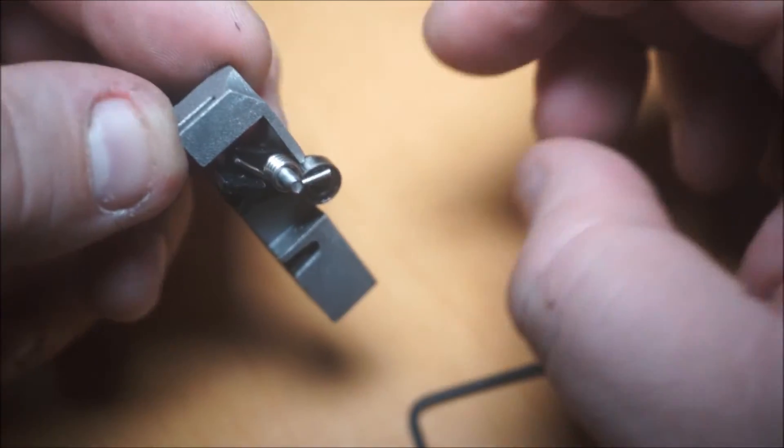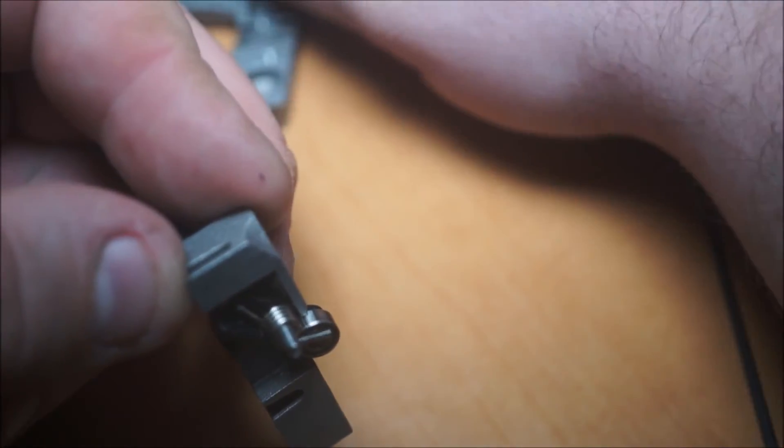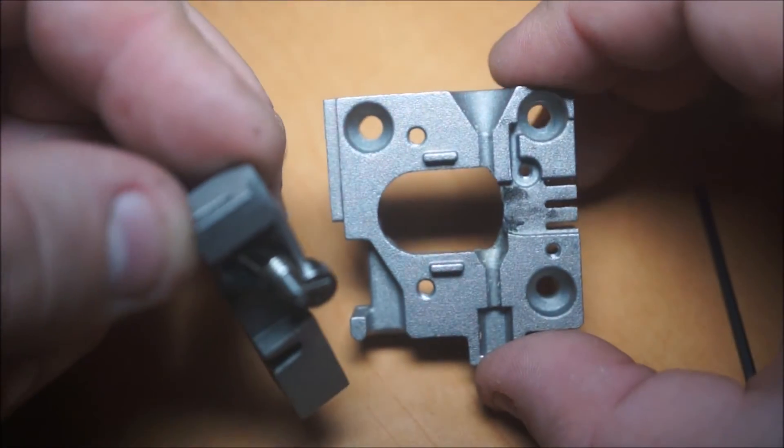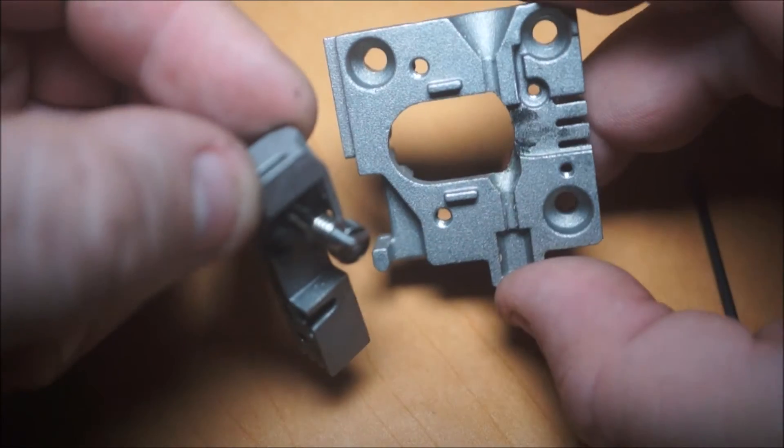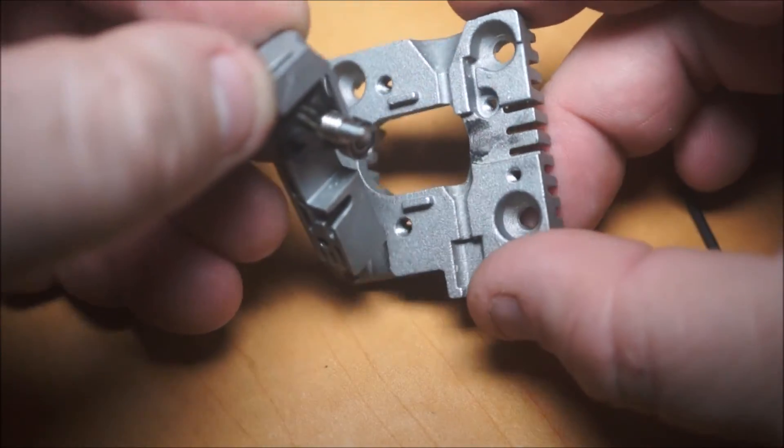So now that we've got this whole mechanism, we want to partially install it onto the main extruder assembly. This is the part that melts the motor. So this hole right here is the hole that threads on.